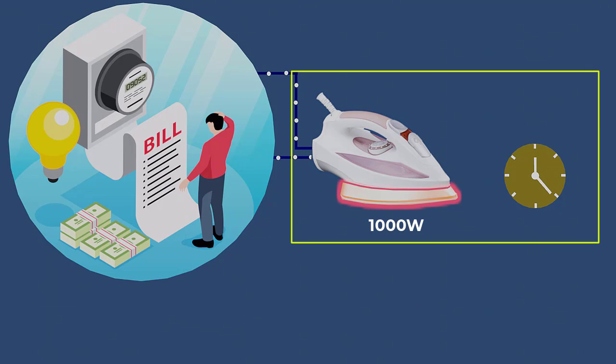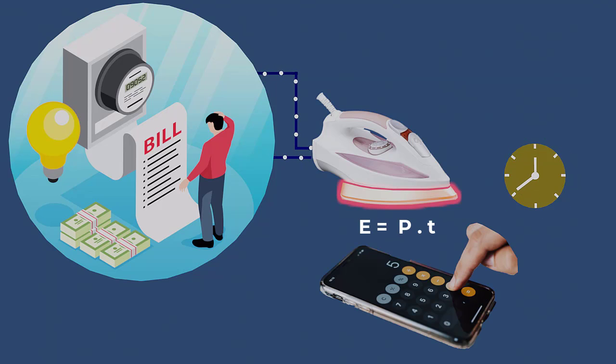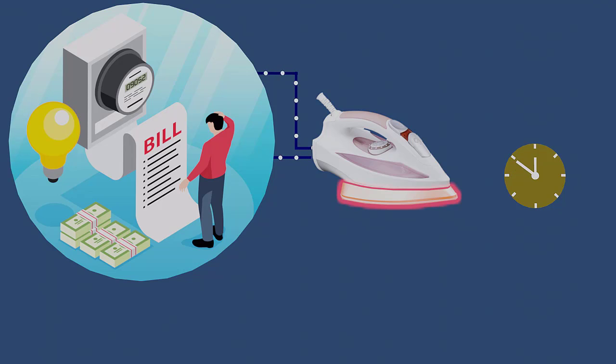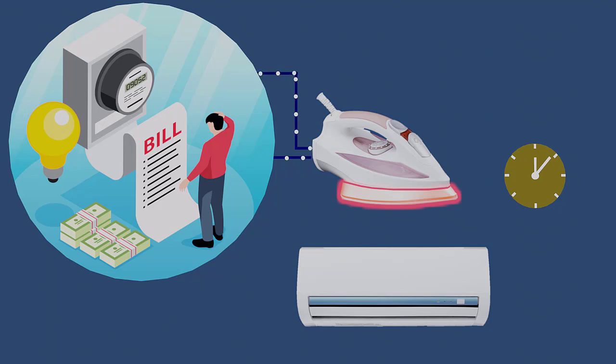Knowing the wattage of your appliances and their usage time can help you estimate your electricity consumption. The major contributor to electricity consumption in the average home is the heating and cooling equipment.